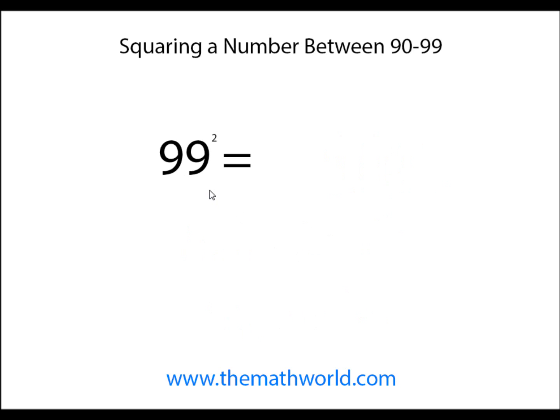The next example we're going to look at is 99 squared, so we're going to take 100 minus 99 equals 1. We're going to go ahead and square that, and we get 01. Again, it is important that this is 2 digits, so we can write 01.